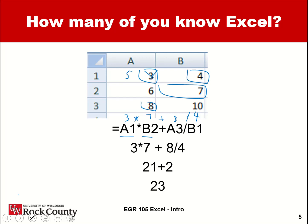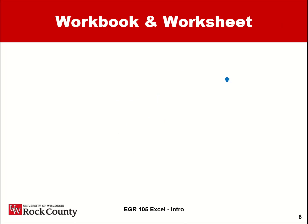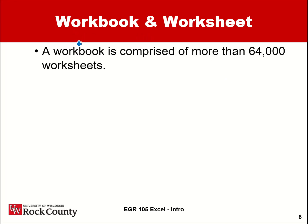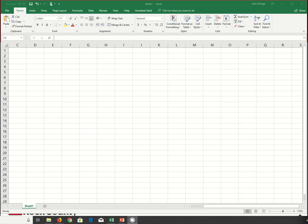Right now let's get into the basics — learning how the parts of Excel itself work: the worksheet and the workbook. A workbook is the whole file that you will be creating, and it's comprised of more than 64,000 worksheets. If we look at a spreadsheet, down at the bottom we see the word 'Sheet' — that is one sheet, or a worksheet. This whole file itself is a workbook.